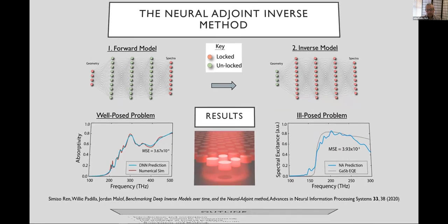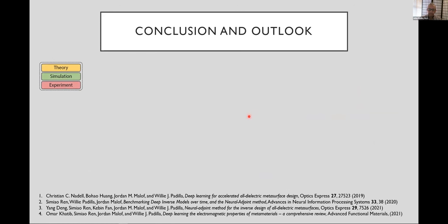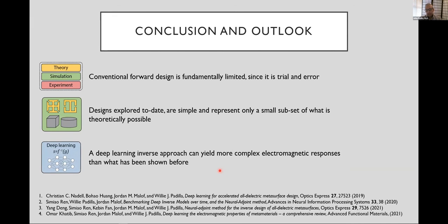So that's everything I wanted to say today. Just allow me to conclude, and hopefully I can put a bit of time back into our symposium here. So conventional forward design is fundamentally limited because it is trial and error. So even if you have deep learning, it's slow. Designs explored to date are simple and only represent a small subset of what is theoretically possible, and so a deep learning inverse approach can yield more complex electromagnetic responses than what has been shown before. So I yield my time. Thank you.